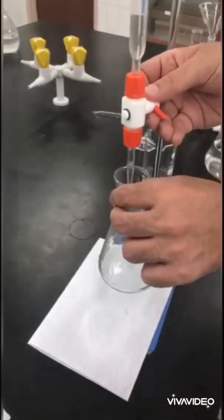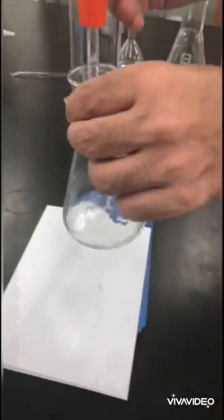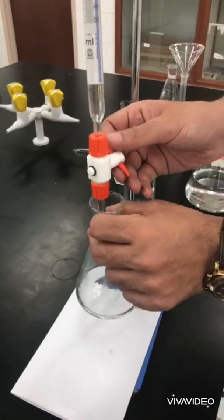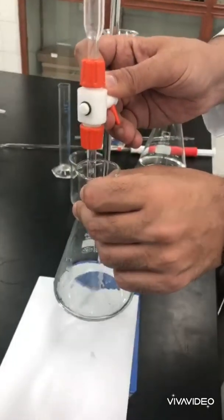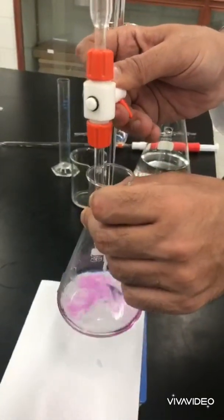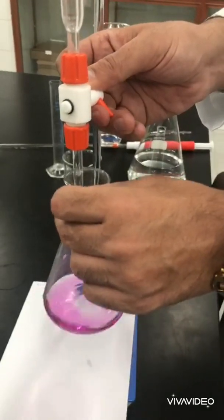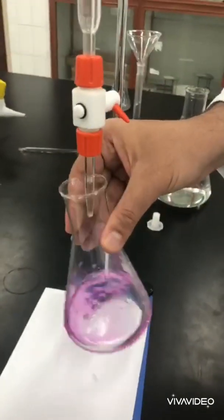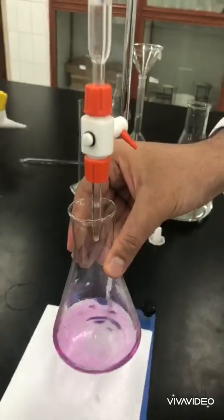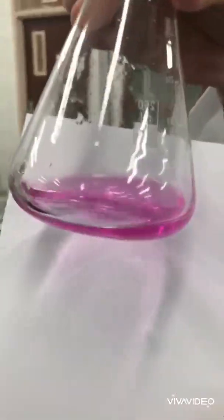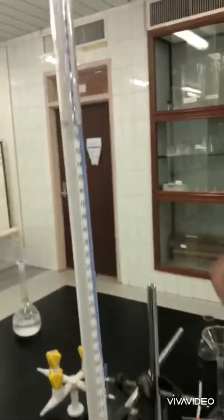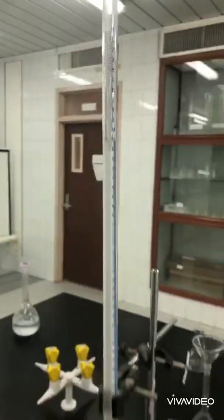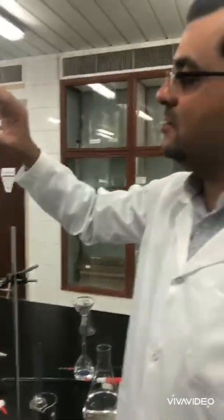As you can see here, the pink color. The entire solution became pink. I'll wait until the color is stable. Yes. Okay, here let's take the volume now. The volume is 10.9 milliliters. Record it. It's 10.9 minus zero, which means the volume of sodium hydroxide used is 10.9 milliliters with HCl.